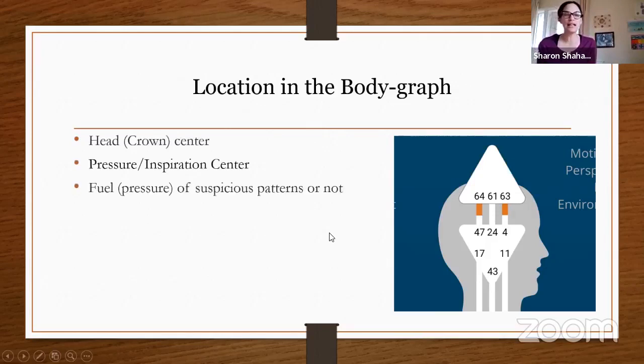They're in the head crown — a pressure and inspiration center. We have several subgroups in the centers: awareness centers, motor centers, and pressure centers. The head center and the root center are pressure centers. The pressure from the root is adrenal — from the earth — while the pressure from the head center is mental pressure.